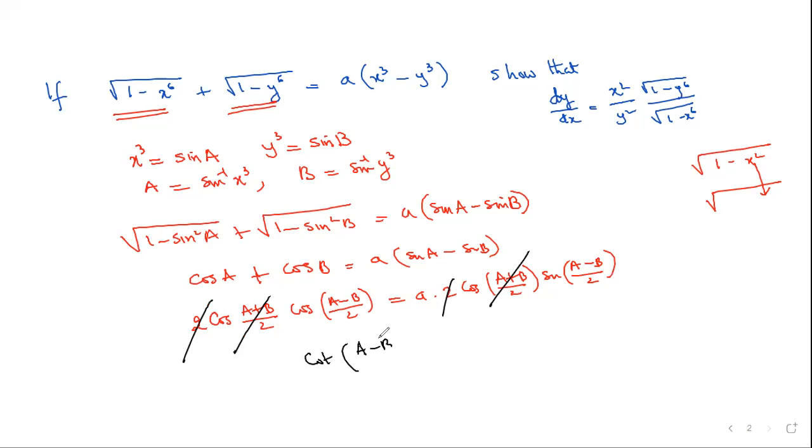Now I'm going to make a - b as a subject because it's a constant. So a - b is 2cot⁻¹(a). Now a can be replaced by sin⁻¹(x³), b can be replaced by sin⁻¹(y³), and this is a constant, so when you differentiate this it becomes 0. Now you can differentiate it.